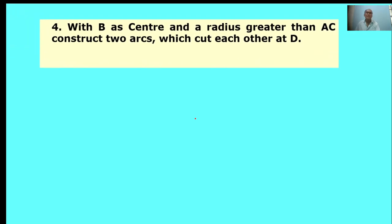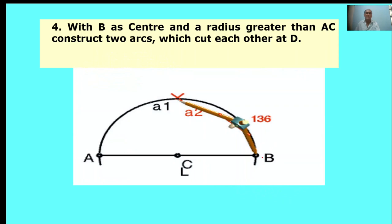With B as a center and radius greater than BC, construct two arcs which cut each other at D. Here, point B is the center. Take the same radius and draw one arc. This arc cuts the previous arc at A1. The intersect point is D. This is called point D.